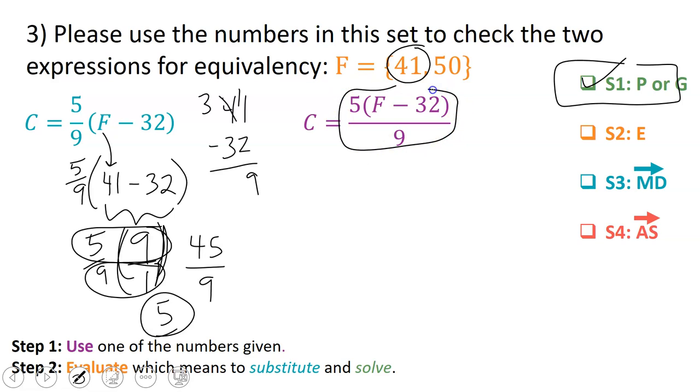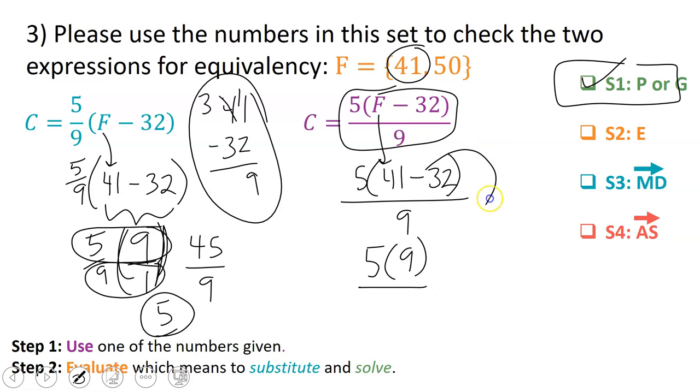Let's look at this expression. So we are replacing the variable with 41. That's called substitution when you replace the variable with a number. We already figured out that 41 minus 32 is 9. So I can plug in 9 here. And then I multiply 5 times 9, and I get 45. And then 45 divided by 9 is 5. So it looks like the two expressions are equivalent.